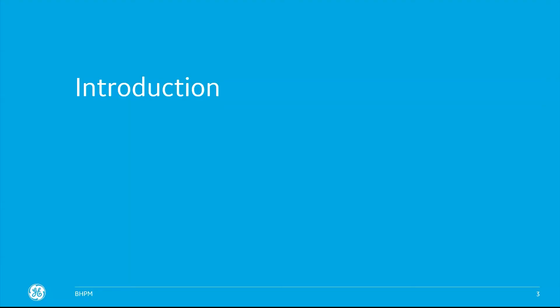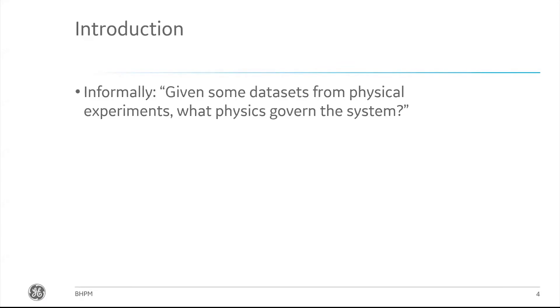The problem setting we're situating ourselves in is the following: if I've got some data sets from laboratory experiments, I would like to know whether I can use machine learning to determine what physics govern the observables that I just collected information about.